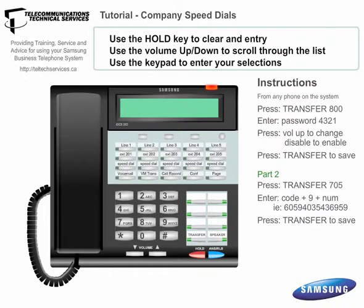Use the hold key to clear an entry if you made a mistake, use the volume up and down keys to scroll through your list, and use the keypad to enter your selections.